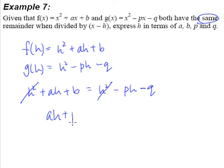So ah + ph will be equal to -q - b. We'll take out h as a common factor, and this will leave us with a + p as part of the product on the left hand side.